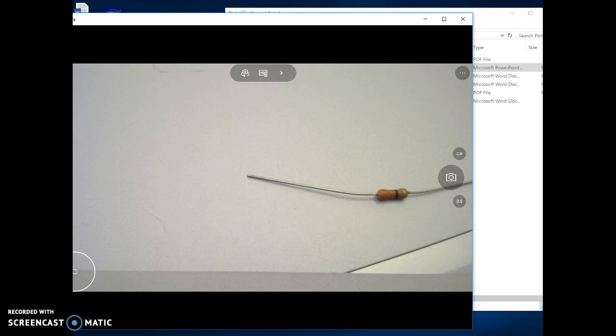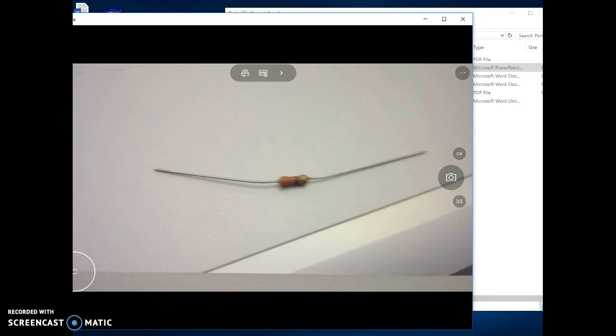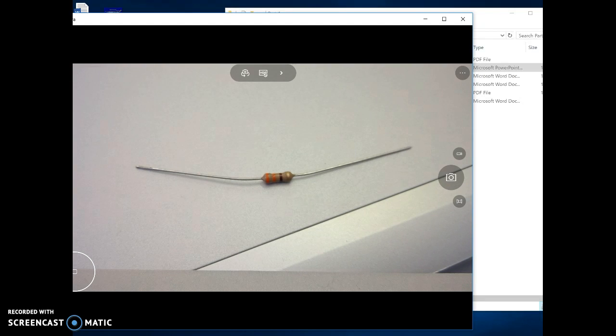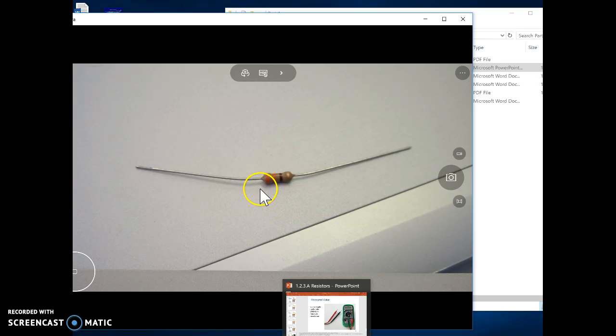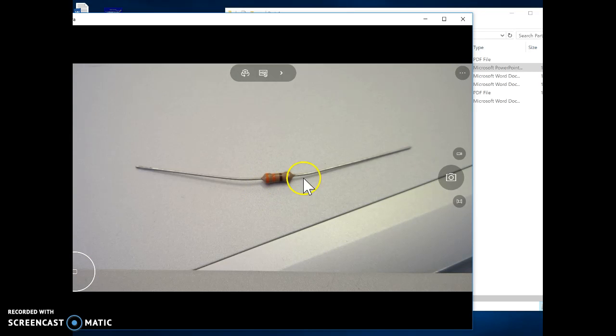So what I want to do now is the resistor that's in front of you is a resistor that we have been working with or will work with, and I want you to take a look at the color codes and determine what type of resistor it is that we've been working with. So take a look at the color codes so that what we have here is orange, orange, brown, gold.